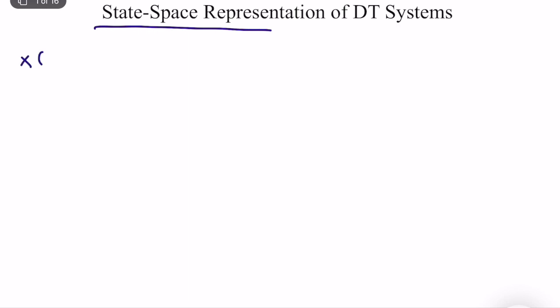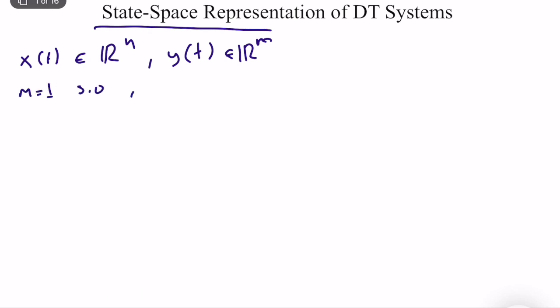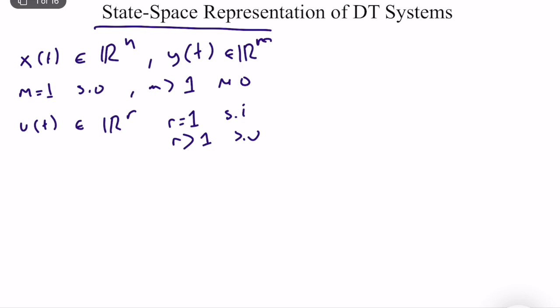So let's remember state-space representation in time domain. In continuous time domain, we have a state x(t) which is an element of R^n, output y(t) which is an element of R^m, and input u(t) which is an element of R^r. If m equals 1, it is single output; if m is larger than 1, it is multiple output. Similarly, if r equals 1 it's single input, if r is larger than 1 it is multiple input. For a SISO system, both r and m should be equal to 1.